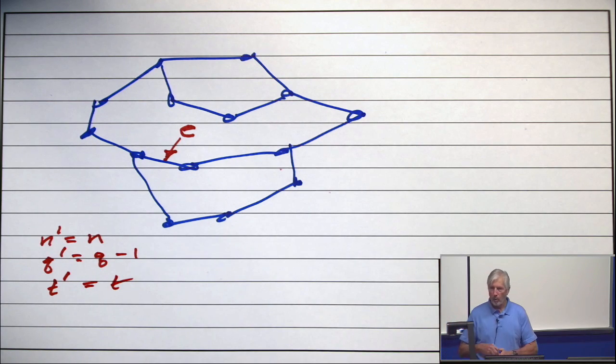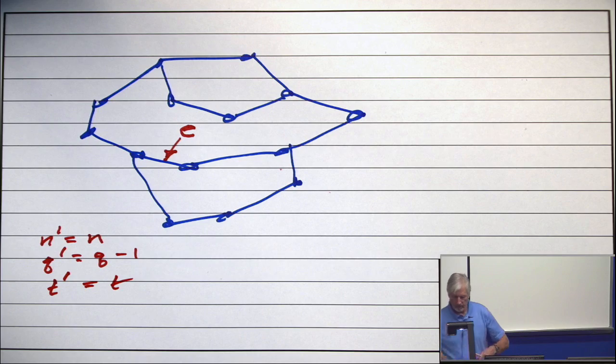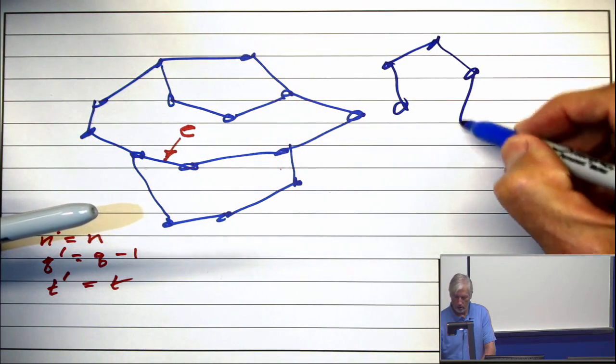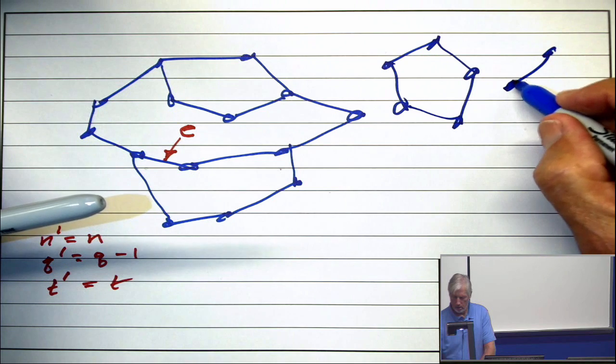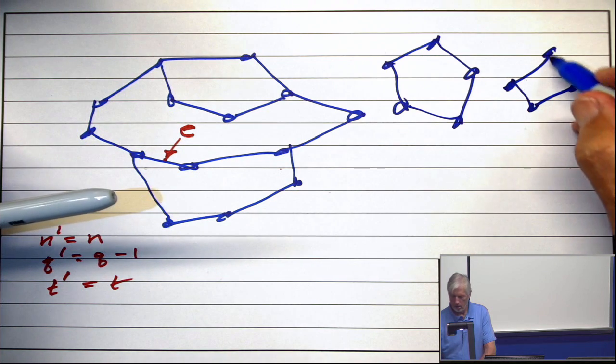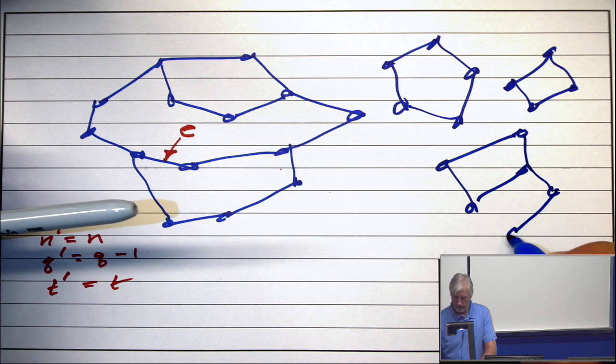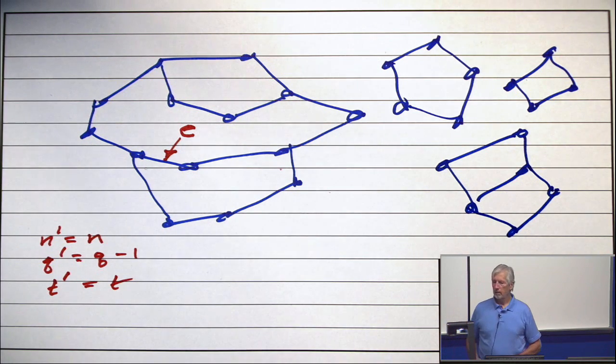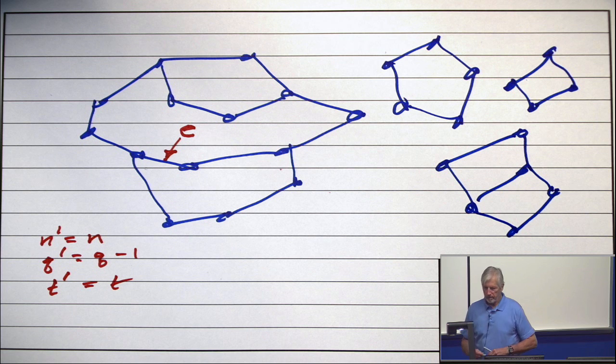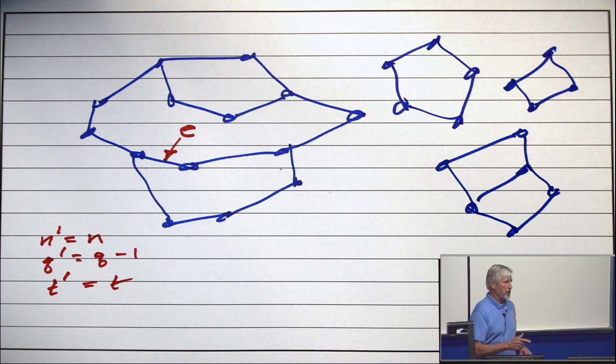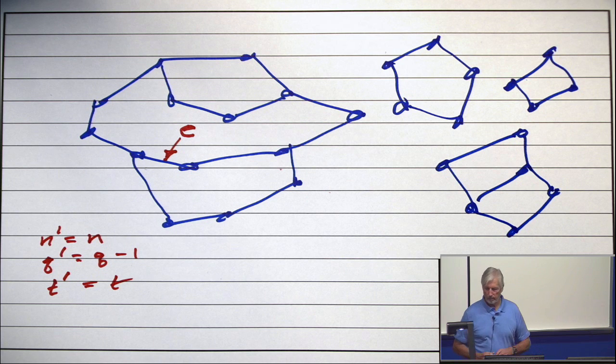See, there might be more components. There might be more components. There are just no bridges. So, when I take away an edge, and there are no bridges, I didn't get any new components.